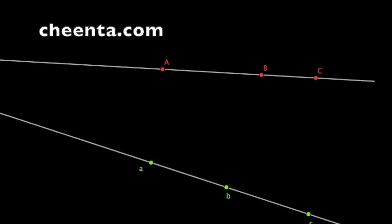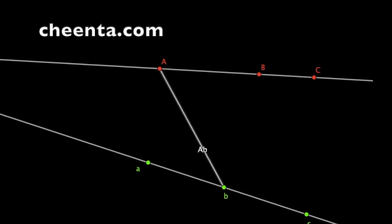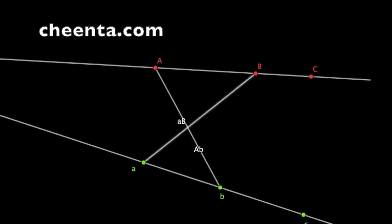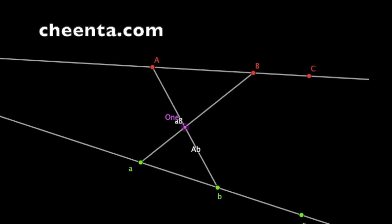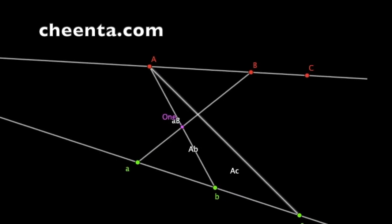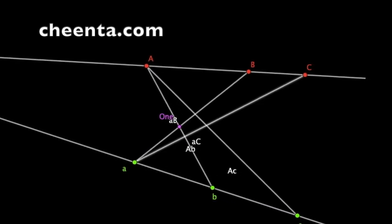Let us join A, b and a, B. Suppose their intersection point is 1. Next join A, c and a, C. Suppose their intersection point is 2.